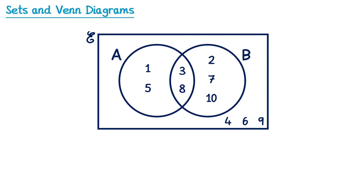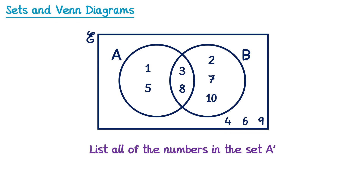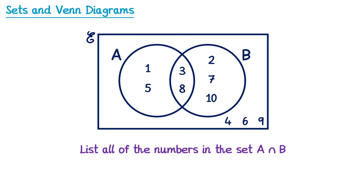Let's look at how these can be used in exam questions. Given a completed Venn diagram, list all numbers in set A — that's 1, 3, 5, and 8. Set B would be 2, 3, 7, 8, and 10. For the set NOT A (A'), we need all numbers not inside the A circle: 2, 4, 6, 7, 9, and 10. NOT B (B') gives all numbers not inside the B circle: 1, 4, 5, 6, and 9. The intersection A ∩ B is just the overlapping section: 3 and 8. The union A ∪ B is any number in either circle: 1, 2, 3, 5, 7, 8, and 10.